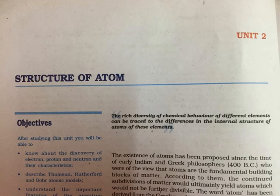Section 2.1.4: Discovery of Protons and Neutrons. Electrical discharge carried out in a modified cathode ray tube led to the discovery of particles carrying positive charge, also known as canal rays. The characteristics of these positively charged particles are: first, unlike cathode rays, the positively charged particles depend upon the nature of gas present in the cathode ray tube — they are simply the positively charged gaseous ions; second, the charge-to-mass ratio of the particles depends on the gas from which they originate; third, some of the positively charged particles carry a multiple of the fundamental unit of electrical charge; fourth, the behavior of these particles in magnetic or electrical field is opposite to that observed for electrons or cathode rays.